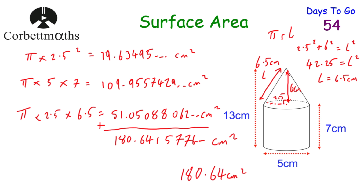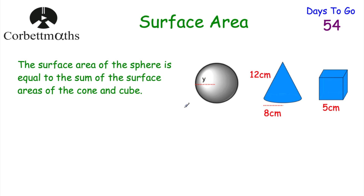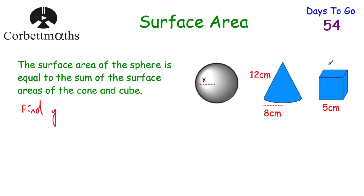Our last question says: the surface area of the sphere is equal to the sum of the surface areas of the cone and the cube. Find y, the radius of the sphere. We need to find the surface areas of the cone and cube first, and that will tell us the surface area of the sphere, from which we can find the radius.